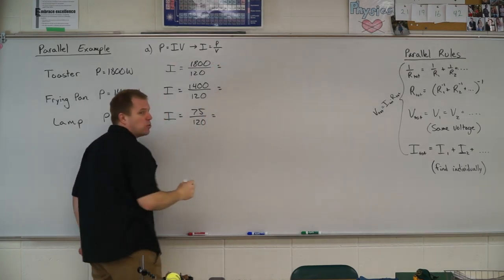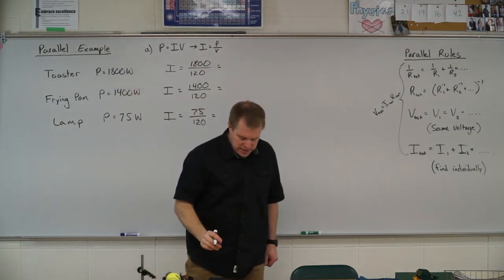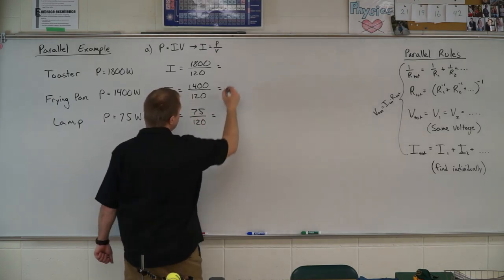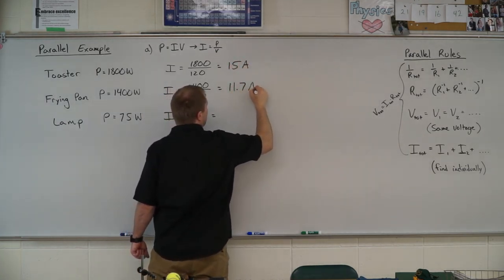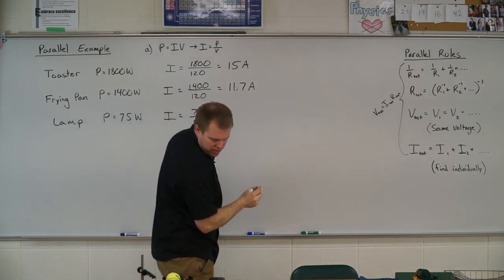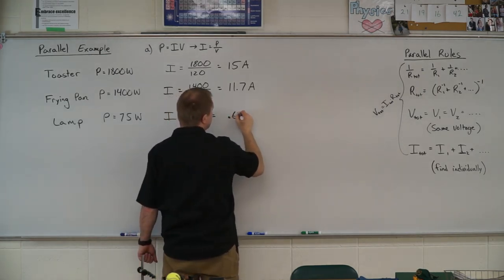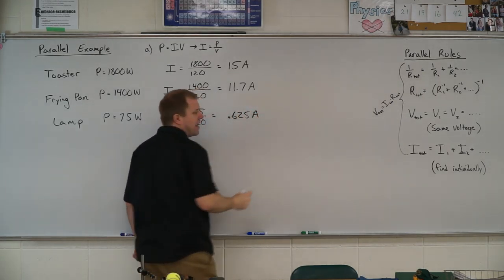These will give me the individual currents for each one. So those numbers are 15 amps, 11.7 amps, and 0.625 amps.